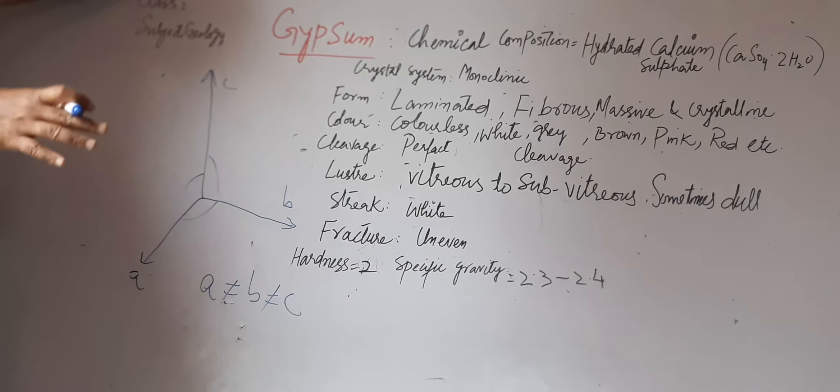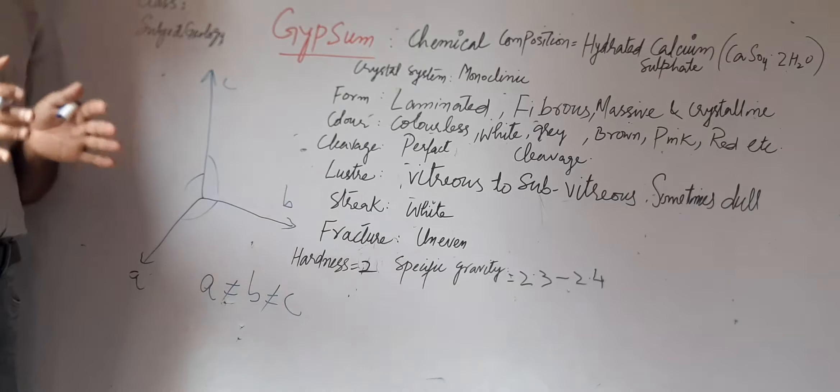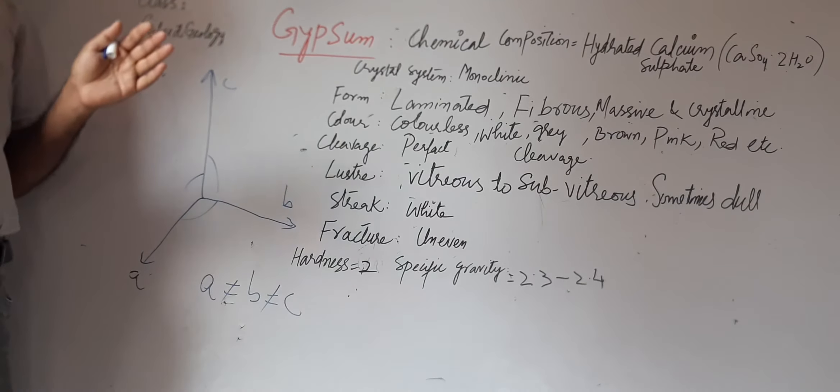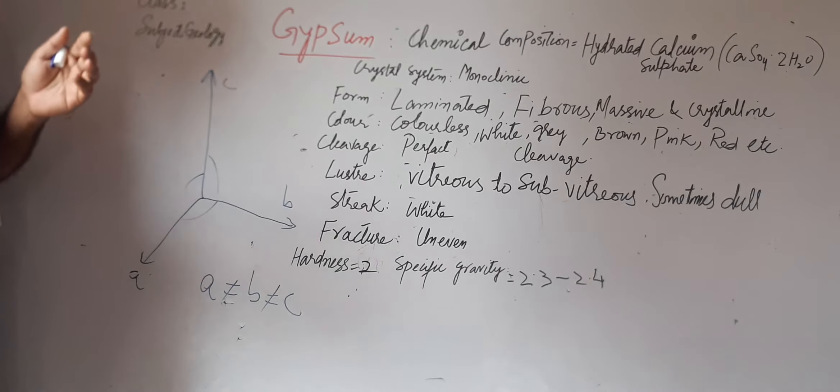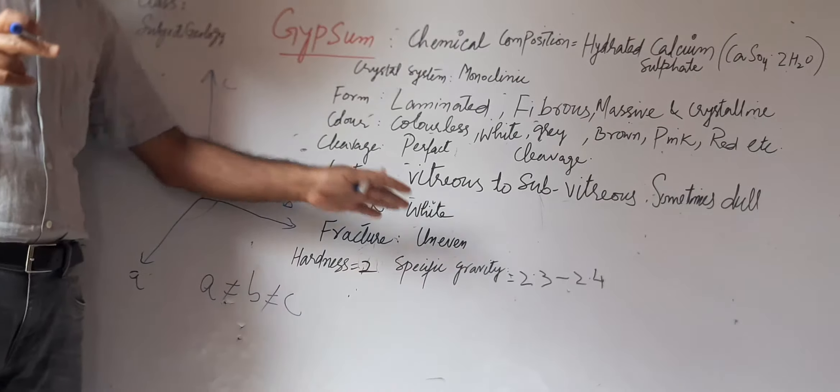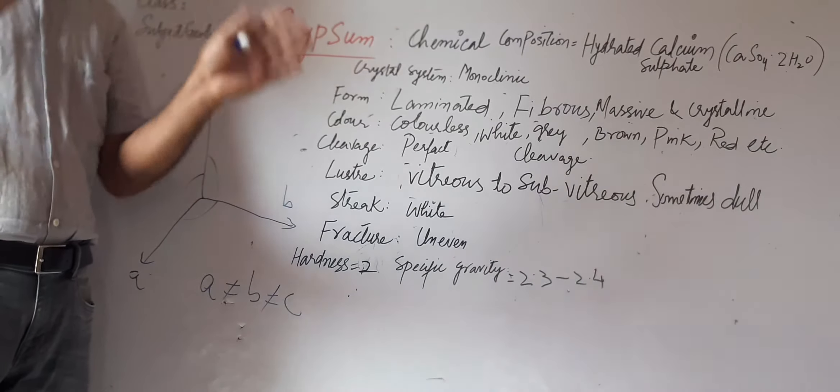...is uneven. I have told you what is an uneven fracture: when we break the mineral gypsum, it breaks into pieces. The surfaces of these pieces or edges show uneven fracture, means rough and irregular surfaces.